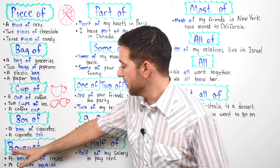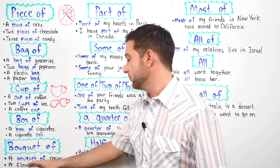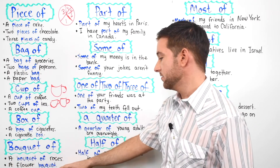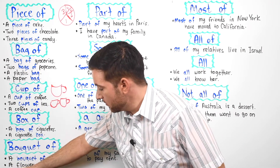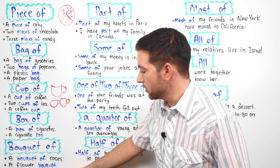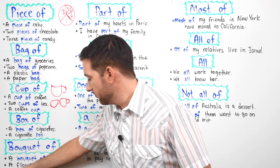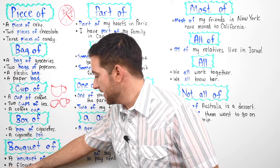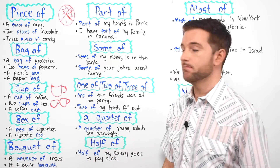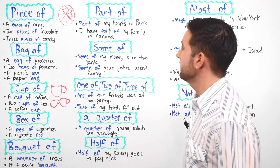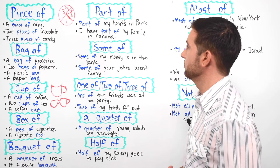Now we have "bouquet of" — for example, a bouquet of roses. And then same sort of thing: we're not describing quantity, but we're talking about the type of bouquet it is. And this one is a flower bouquet — that's the kind of bouquet it is.